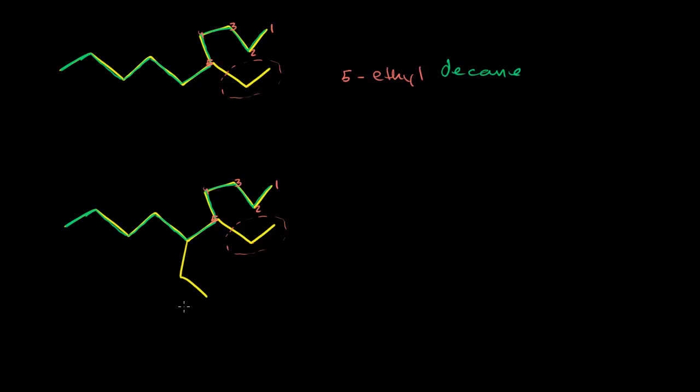Now what is this going to be? Well, the longest chain is still going to be that thing in green. So it's still going to be a decane. But now we have two ethyl groups. One on the 5 carbon - 1, 2, 3, 4, 5 - and then one on the 6 carbon.